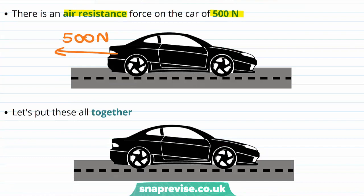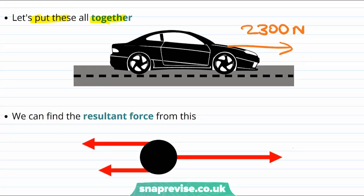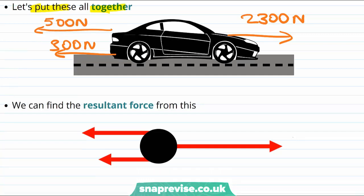Now that we've figured out all of the forces that will act on the car, let's put them all together in one diagram. We have our driving force of 2300 newtons, a frictional force of 300 newtons, and an air resistance force of 500 newtons.